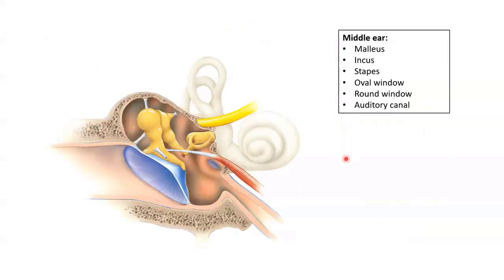The middle ear is a small air-filled cavity that also sits within our temporal bone. It is separated from the external ear by the tympanic membrane, and from our internal ear by a thin piece of bone which has two small holes: the oval window, which is partially hidden by this bone, and the round window, which sits just beneath it.